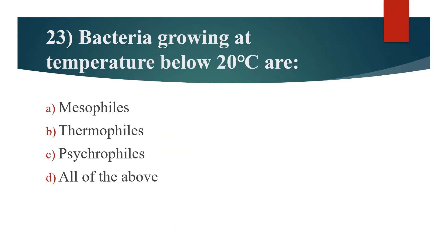Twenty-third question. Bacteria growing at temperature below 20 degrees Celsius are. Option A: Mesophiles. Option B: Thermophiles. Option C: Psychrophiles. Option D: All of the above. Answer is Option C: Psychrophiles.